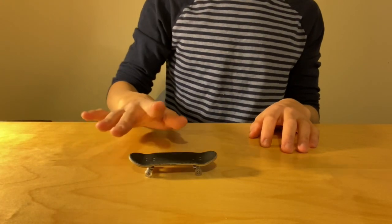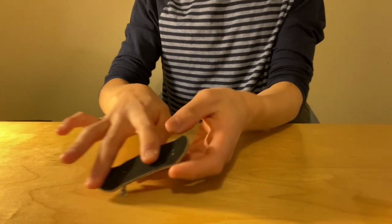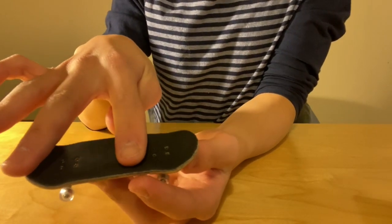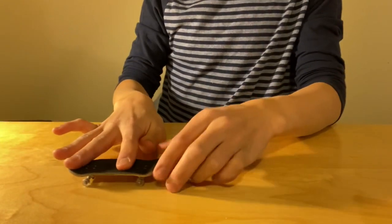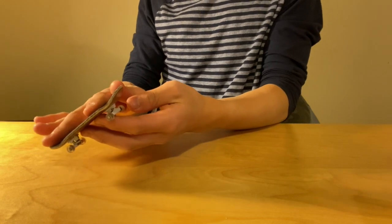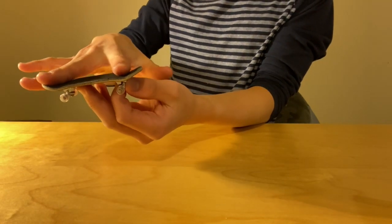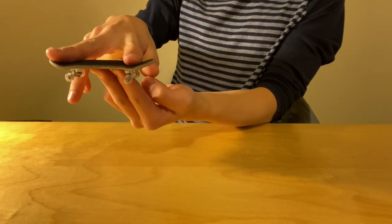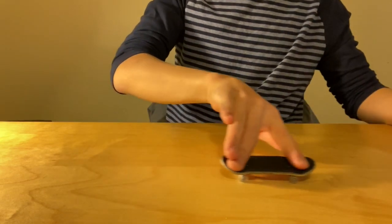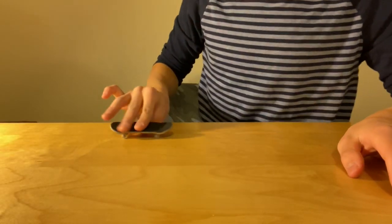Alright, to perform the ollie, place your back finger on the tip of the tail and your front finger behind these four front bolts. When you pop the board up, you want to slide your front finger forward, causing it to level out the board. This is how it should look.